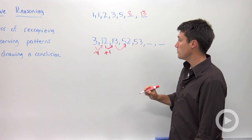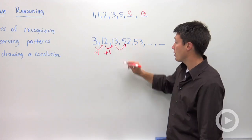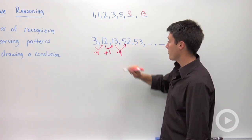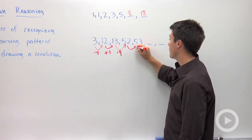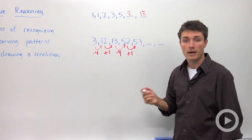To get from thirteen to fifty-two, I could add a certain number or I could see that there might be a pattern forming here where I need to multiply by four and then to find my next term, I'm going to add one.